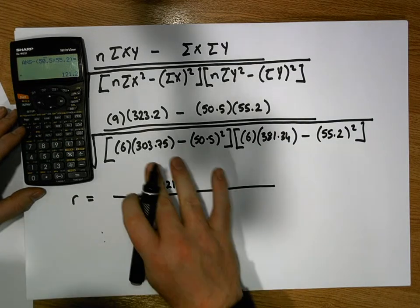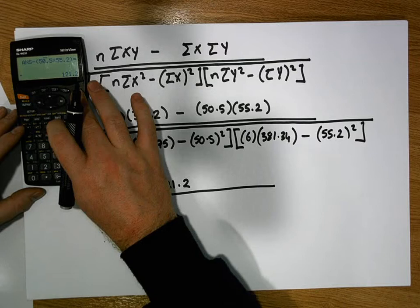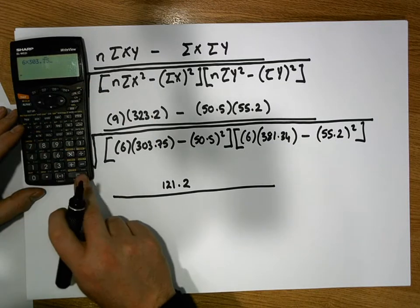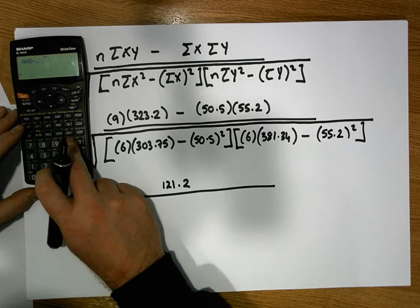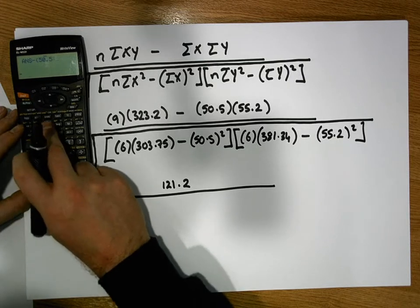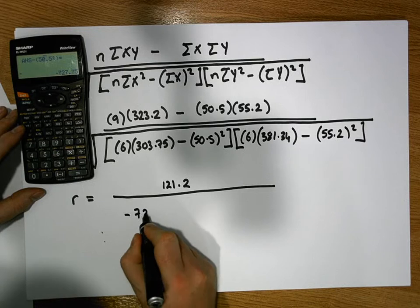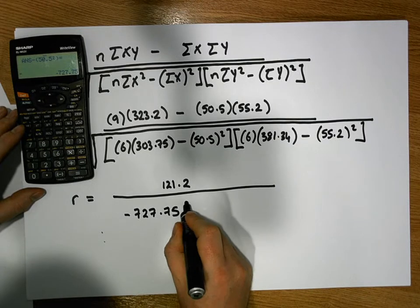Let's calculate the left factor here, which is 6 times 303.75 minus 50.5 squared. That gives us a value of minus 727.75.